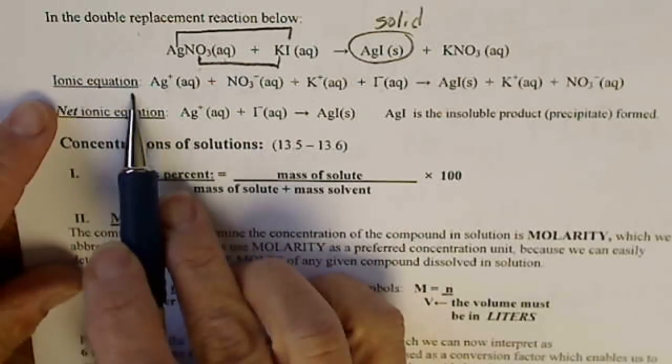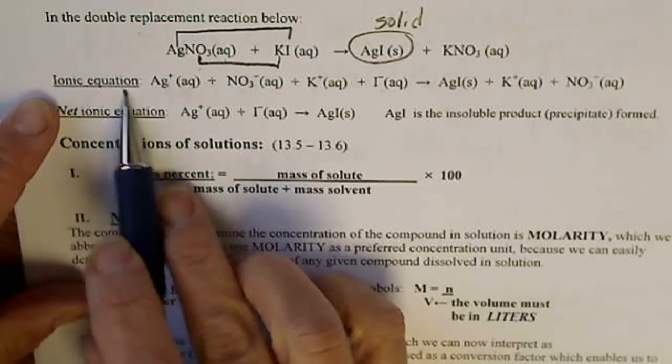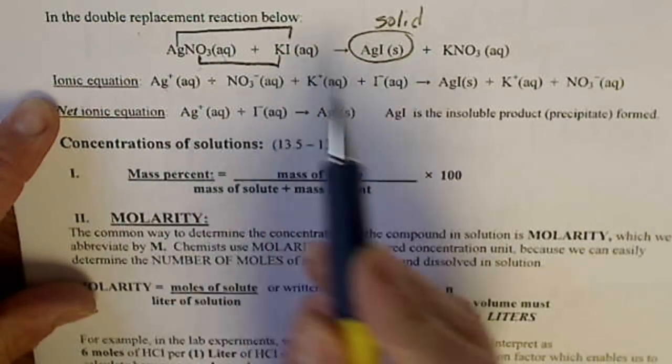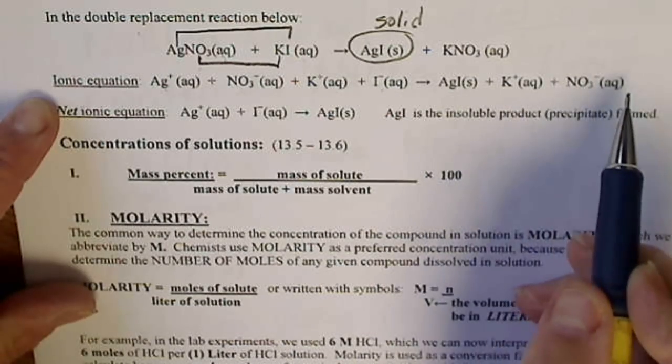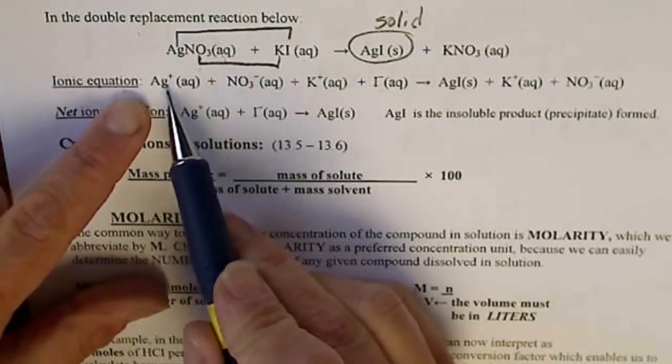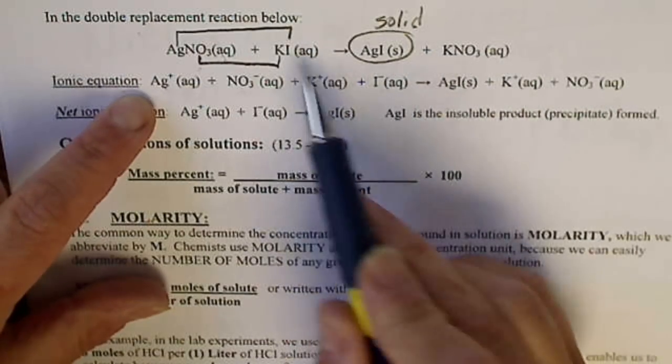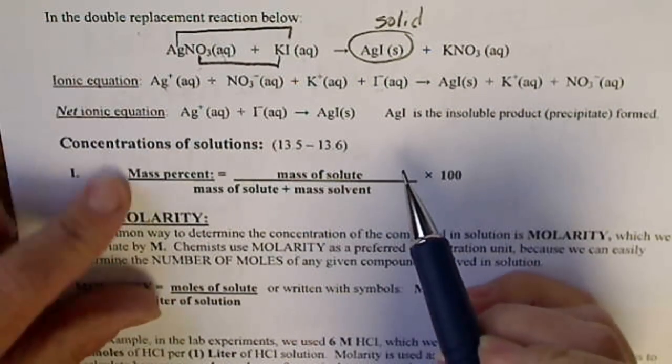And if we write the ionic equation, that's just showing each thing that has AQ written after it separated as ions, and so before the silver can get together with the iodide, each one of these compounds has to separate into the ions.